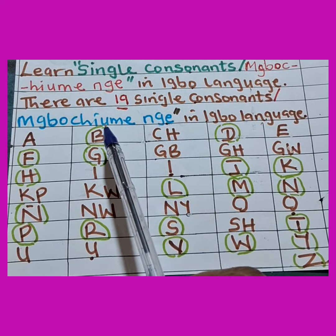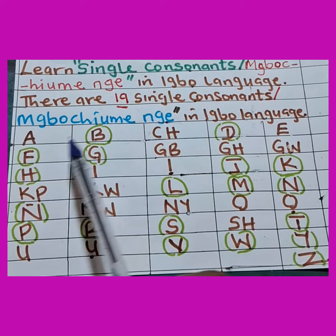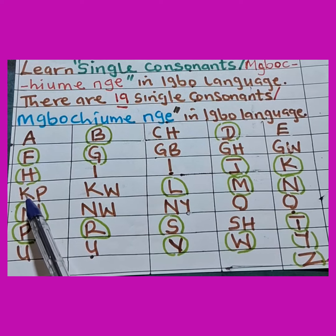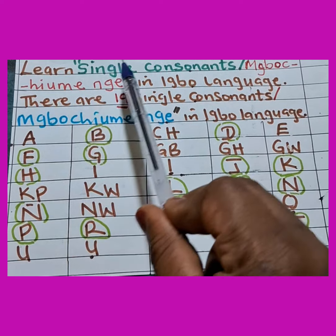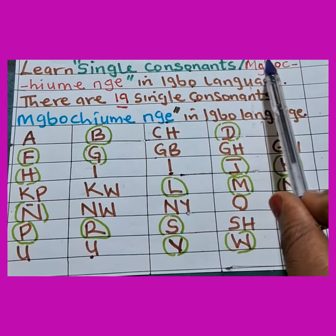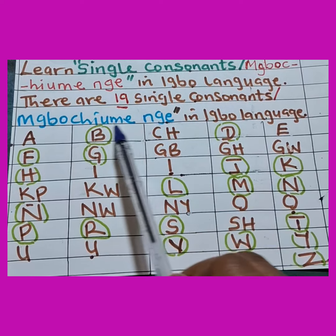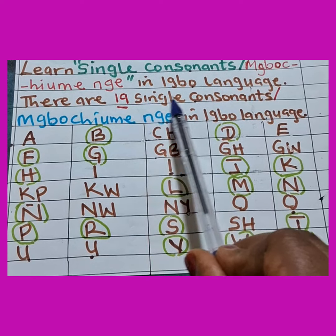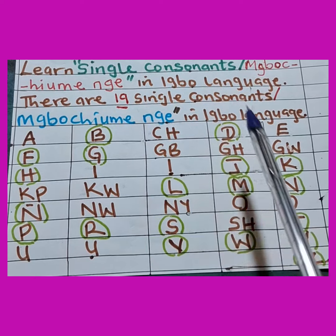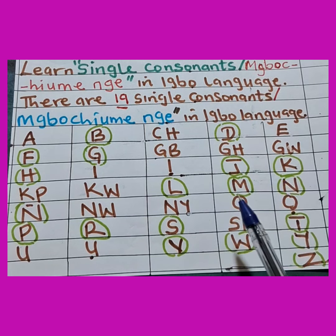That is where we circle them, for you to know that they are single consonants. We call single consonants in Igbo, Mbochumenge. Yes, Mbochumenge — they are 19 in number. Like and share our videos, follow us for more. Bye bye.